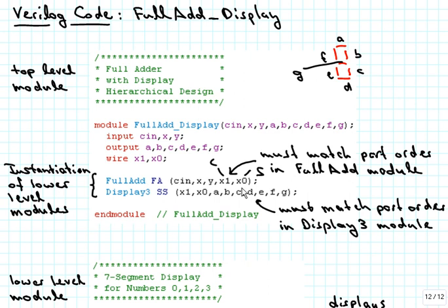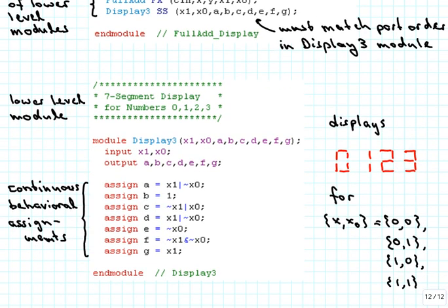Then the top-level module ends, and we see the seven-segment display module. It takes those two bits as input: if X1,X0 is 0,0 it displays 0; if 0,1 it displays 1; and so on. The assignments were made based on a table of what A through G must be on the seven-segment display to show the right numbers, implemented here as continuous behavioral assignments. There was relatively little point making this into a procedural statement, even though we could have used the case statement in Verilog, but that's something we'll look at in a later video.